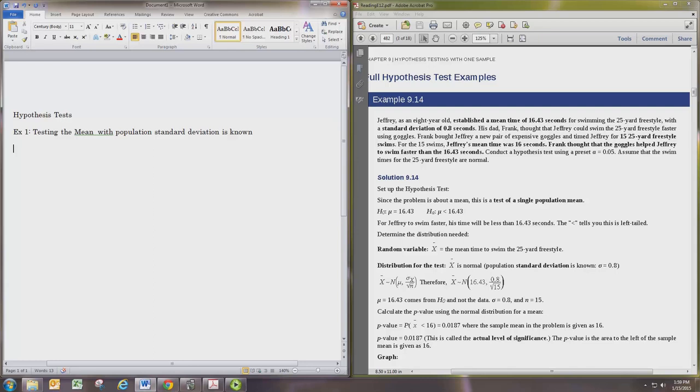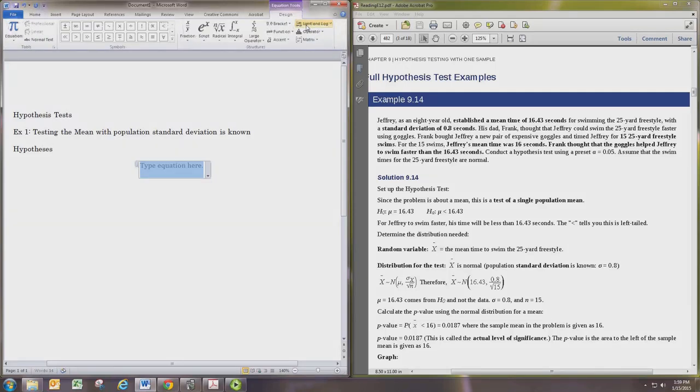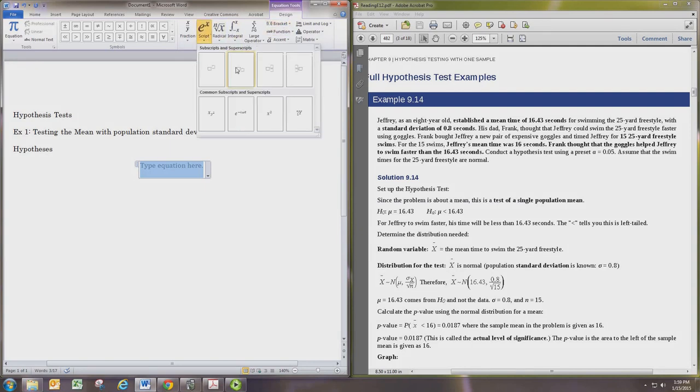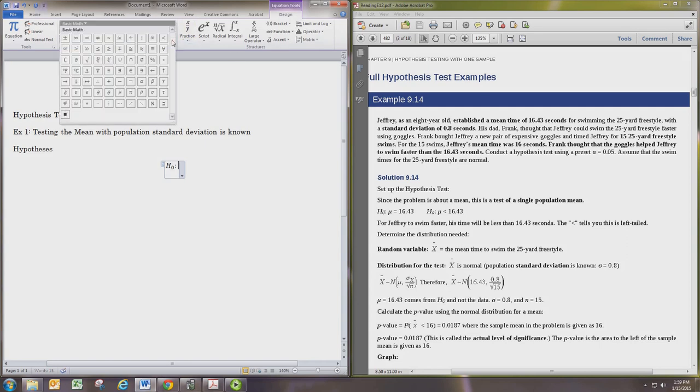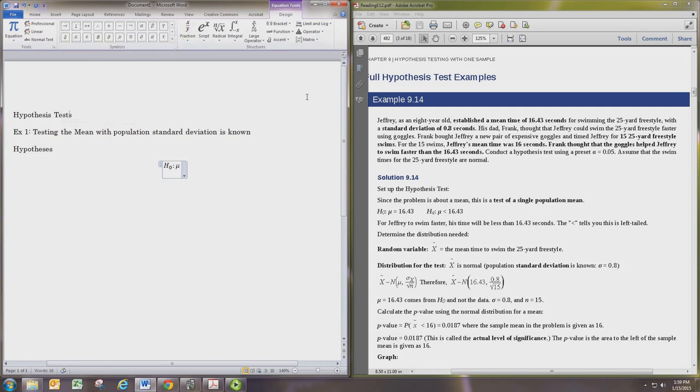With any hypothesis test we will need a pair of hypotheses. We're going to use H₀ for the null hypothesis, and since we're testing the mean we're going to use the lowercase Greek letter mu to represent the population mean.